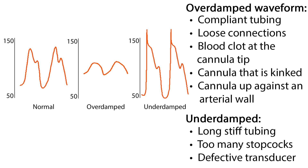Waveforms can be over-damped or under-damped. The over-damped waveform may be caused by compliant tubing, loose connections, a blood clot at the cannula tip, or a cannula that is kinked or up against the arterial wall. The under-damped waveform can be caused by long stiff tubing, too many stopcocks, or a defective transducer.